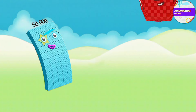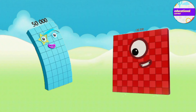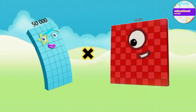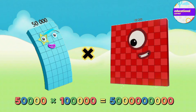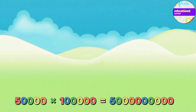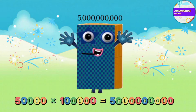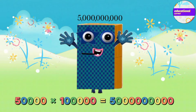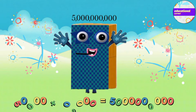Fifty thousand multiply by one hundred thousand equals five billion.